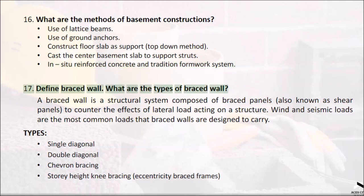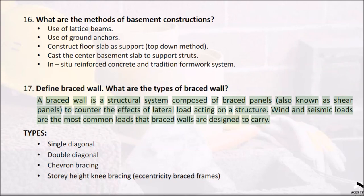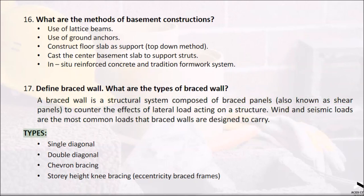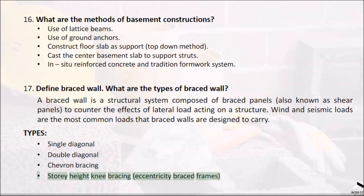Question 17: Define braced wall. What are the types of braced wall? A braced wall is a structural system composed of braced panels, also known as shear panels, to counter the effects of lateral load acting on a structure. Wind and seismic loads are the most common loads that braced walls are designed to carry. Types: single diagonal, double diagonal, chevron bracing, story height knee bracing, eccentrically braced frames.